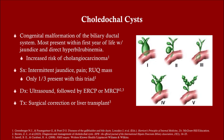Let's finish up with choledochal cysts. You don't need to know all the different types — this is a congenital malformation of the biliary ductal system, different from congenital biliary atresia. Many present in the first year of life. If you have a small child with an obstructive jaundice picture, that's a big problem. A baby with unconjugated hyperbilirubinemia is probably jaundice of infancy — very common and benign. However, jaundice in an older infant or small child should make you think of choledochal cysts.